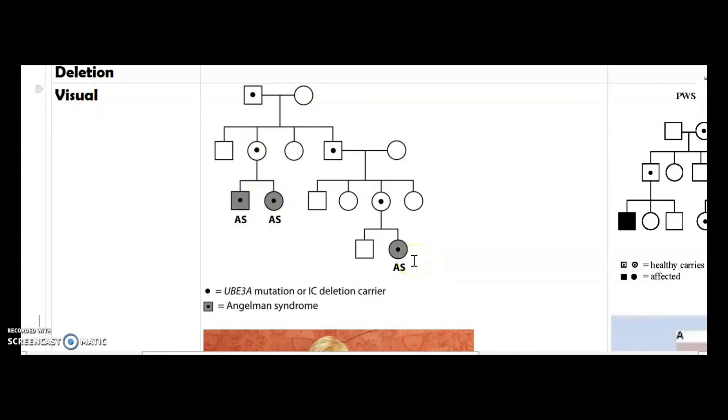For Angelman syndrome, as you can see here, let's say the father is affected or he's a carrier. Over here you can see that one daughter and one son are affected. The son gets married and then one of his girls is a carrier. The daughter has a daughter that is also affected.